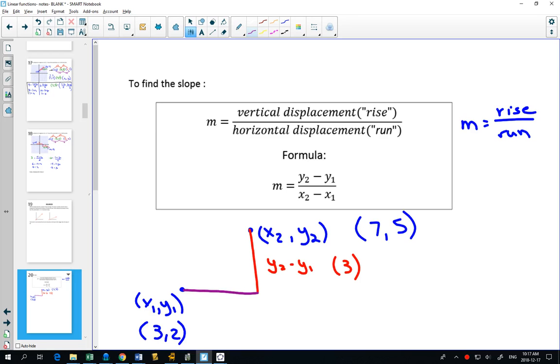And your run is X2 minus X1. If I went from 3 to 7, this number should be 4. Does that make sense? If I take X2, which is 7, and I minus X1, which is 3, do I get 4? Yes. So the formula Y2 minus Y1 over X2 minus X1 is just finding that vertical distance and that horizontal distance.